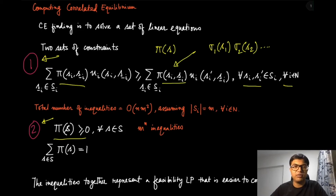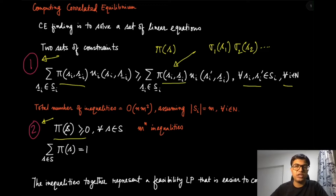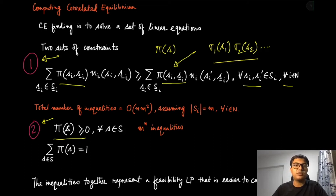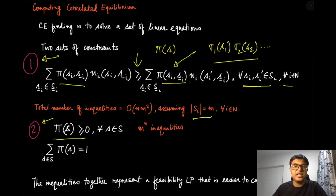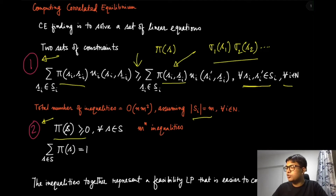Let us look at how many inequalities we are trying to solve — comparing the number of inequalities gives one idea of how easy it is to solve. We are not considering the nonlinear case for Nash equilibrium here; we are just counting the number of inequalities. Because this inequality must be satisfied for all s_i and s_i', if we assume the cardinality of each player's strategy set equals m, there will be m² inequalities per player, so together there are on the order of n·m² inequalities.